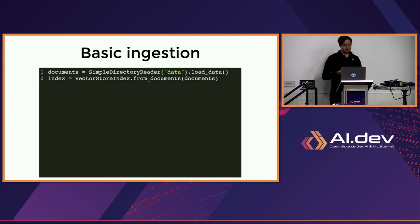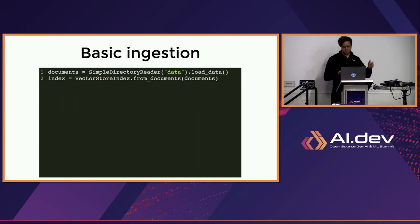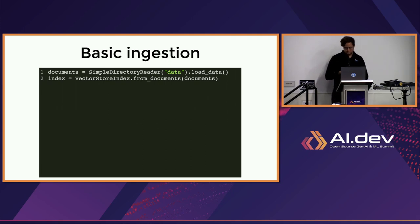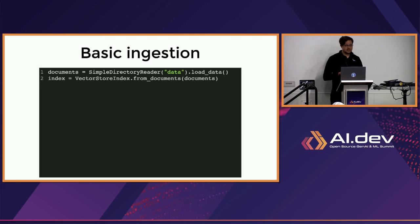The very simplest form of ingestion is just to load a bunch of files on disk into memory directly. In Llama Index, you can do that with one line of code. This example I'm showing, Simple Directory Reader, can handle a huge variety of file formats — CSVs, PDFs, Word files, also images, audio, and video for when you want to do multimodal things. And if you're happy with our default settings, then you're done at this stage. You can create an index and start querying it.